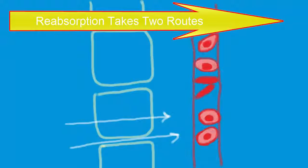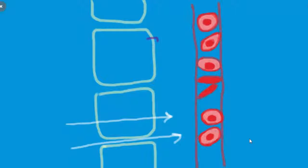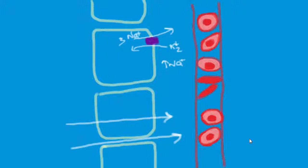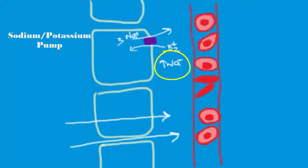We will first focus on sodium because it is the most abundant cation in the filtrate. At the basolateral membrane of this PCT cell, I'm drawing in a transport carrier that's going to transport three sodium out of the cell and two potassium into the cell. And you may have guessed it, this is the sodium-potassium pump.